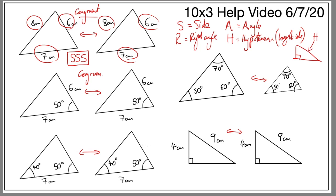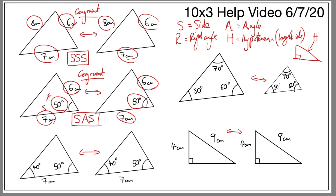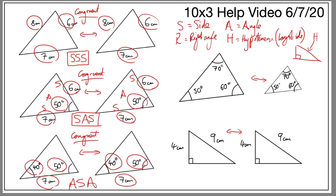The next pair is congruent for a different reason. We have an angle that matches (A), a side that matches (S), and another side that matches (S) — SAS, side-angle-side. The angle must go between the two sides for this to work. The pair after that is also congruent: we have an angle which matches, a side in between which matches, then another angle — ASA, angle-side-angle.